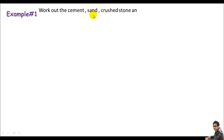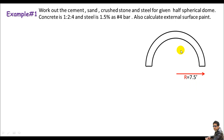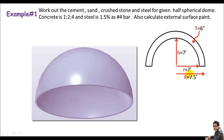We are asked to work out the cement, sand, crushed stone, and steel for a given half-spherical dome. The concrete mix is 1:2:4 and the steel is 1.5%, with only number four bar used. We are also asked to calculate the external surface paint area. The external surface radius is 7.5 feet, the thickness is 6 inches, so the interior radius is 7 feet, and the height or rise of the dome is 7 feet.